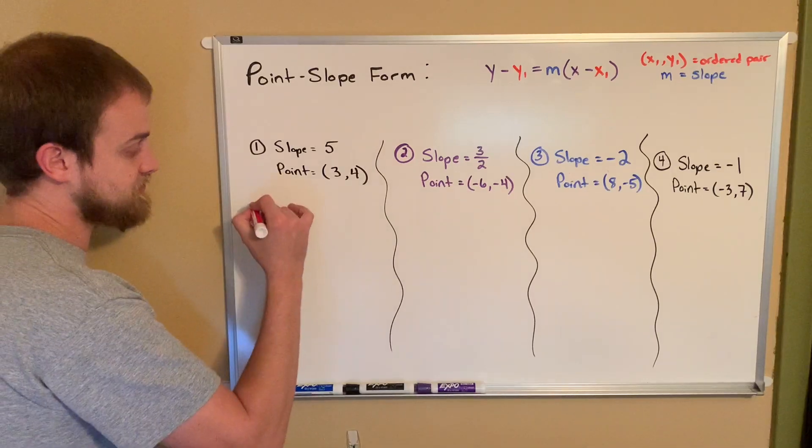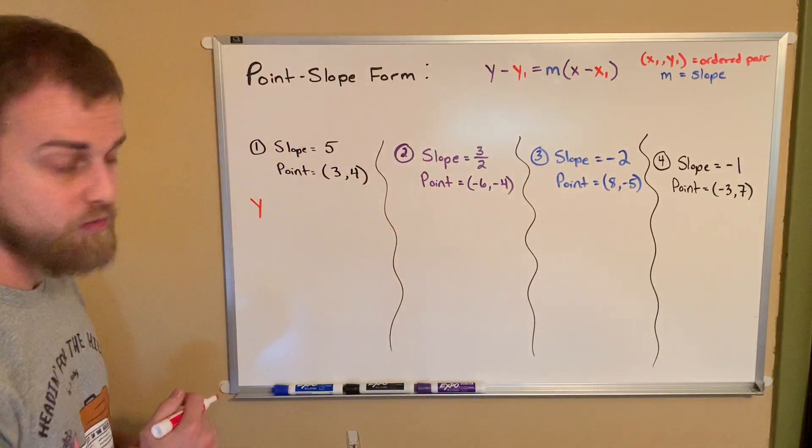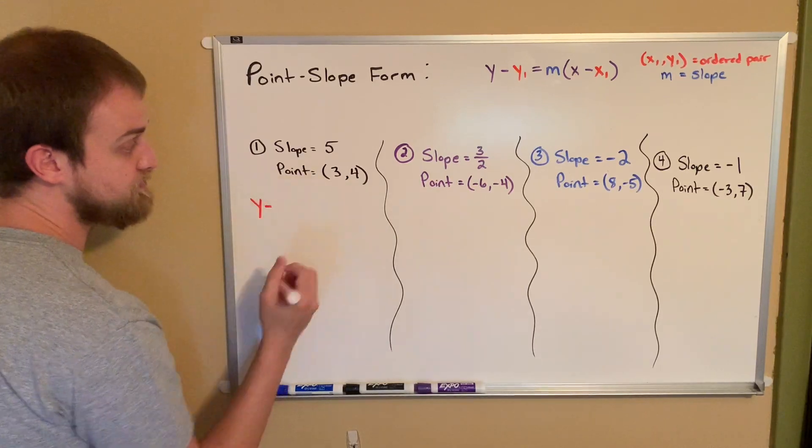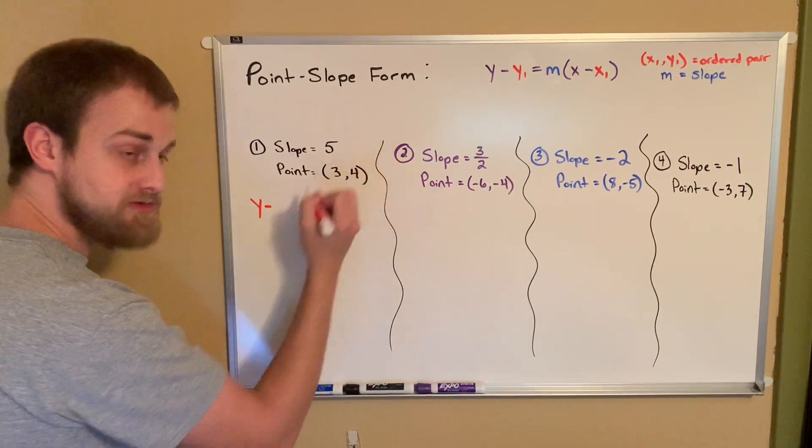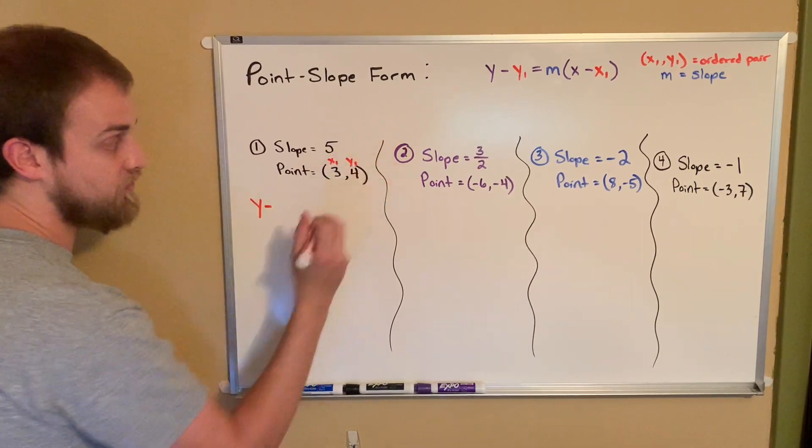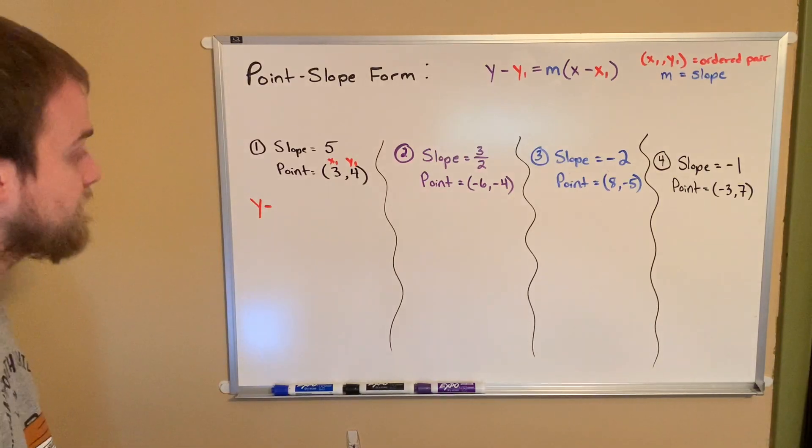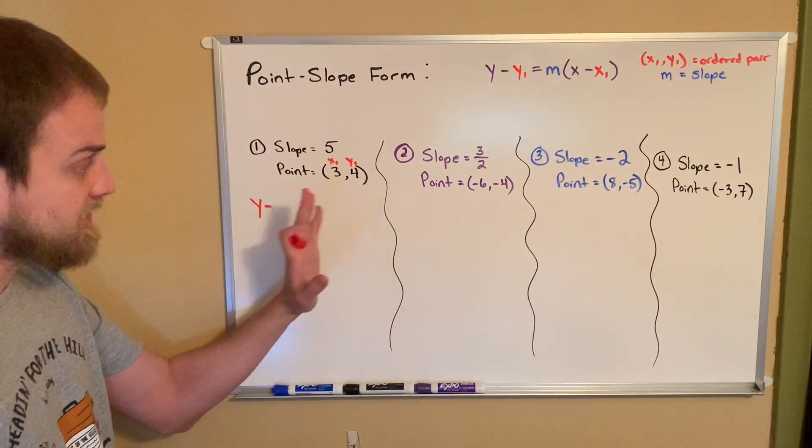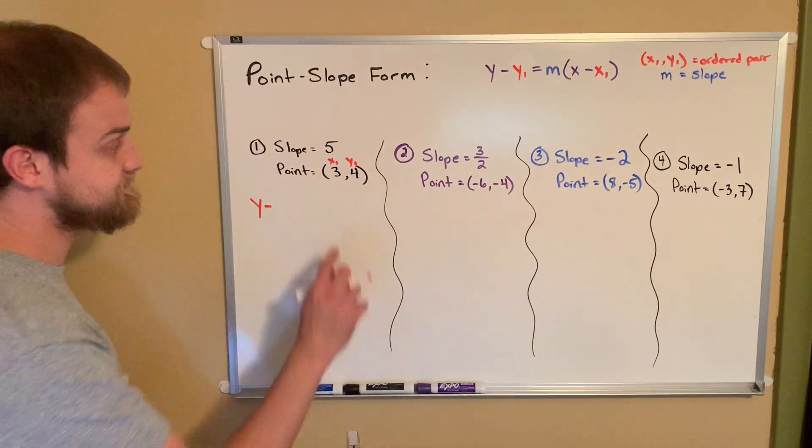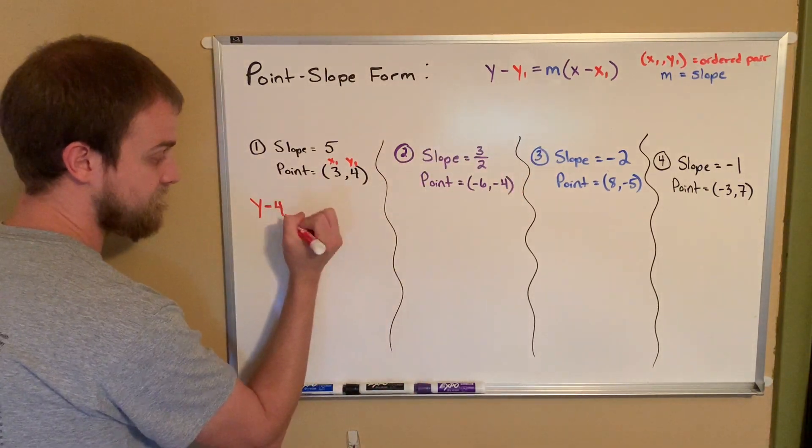Notice that it's going to start as y. Now I need to do minus y sub 1. Remember, that comes from my ordered pair. This is we're going to call this x sub 1 and y sub 1. Now there is no x sub 2 or y sub 2 like there is in the slope formula. So we just use this ordered pair as it is. Well, I need y minus y sub 1, which is 4.